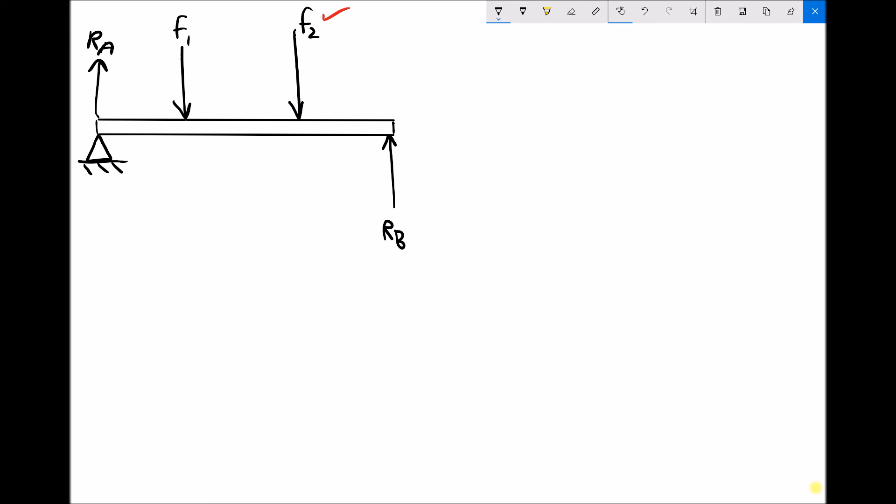And I'm going to replace Rb with a roller. So Rb is going to have a roller as the support. Once again that's still going to apply a vertical force which we're calling Rb, but the difference is that that joint will allow lateral movement, or side to side movement.